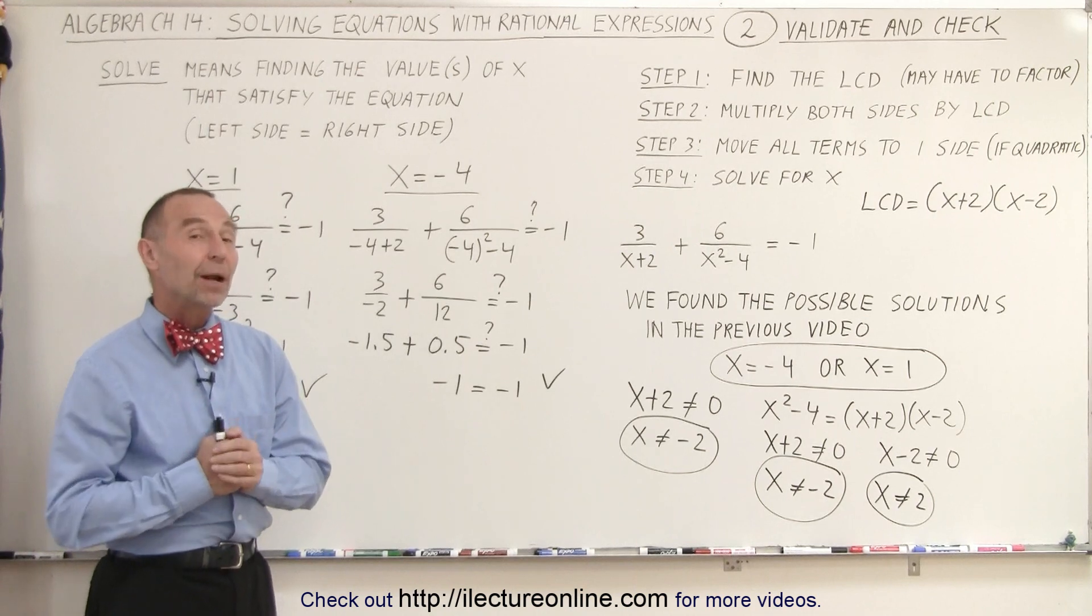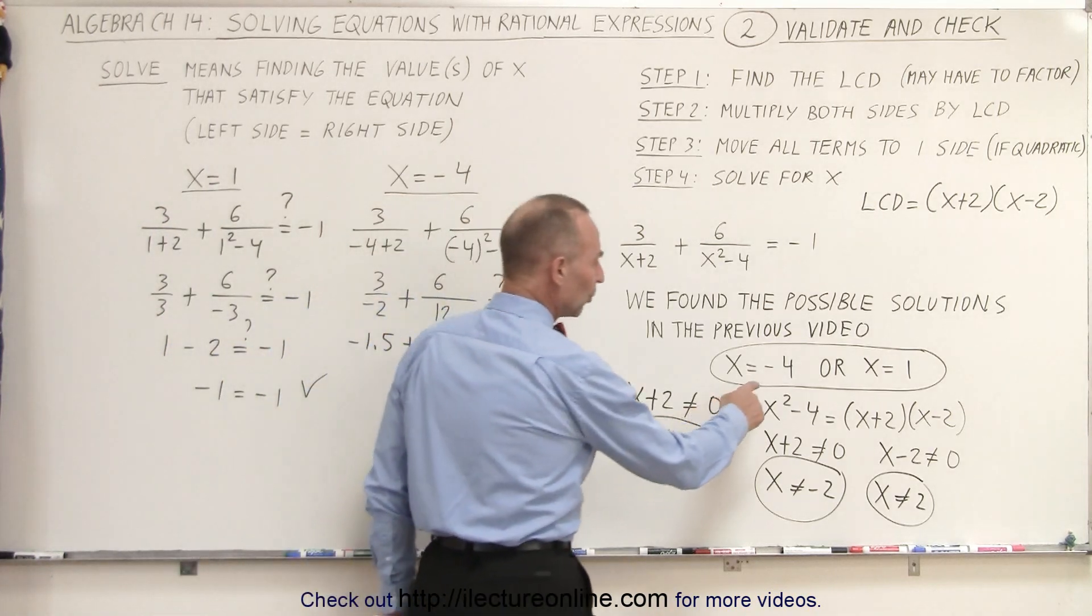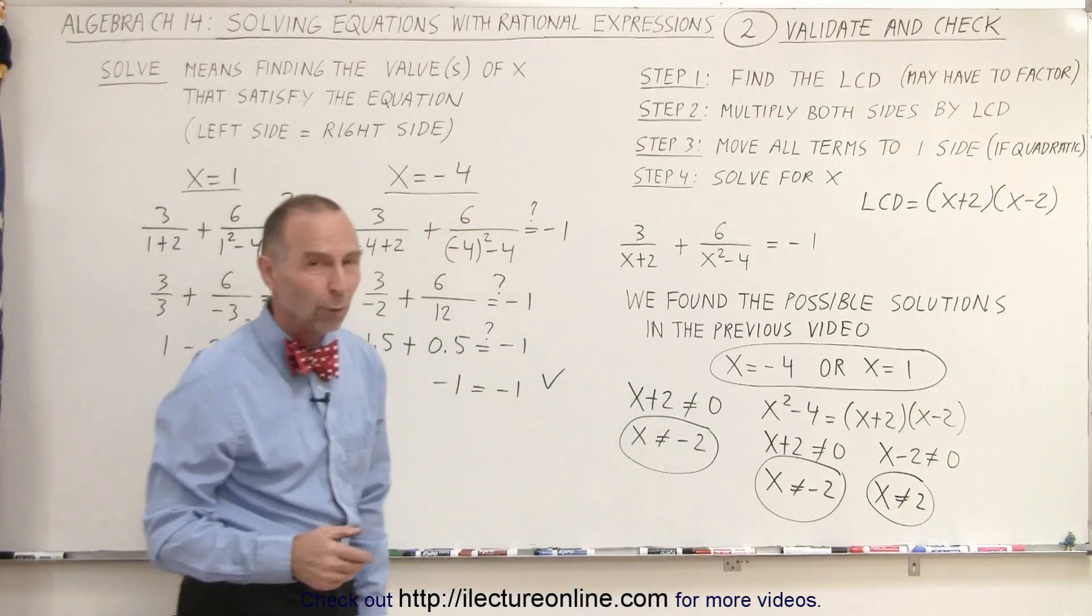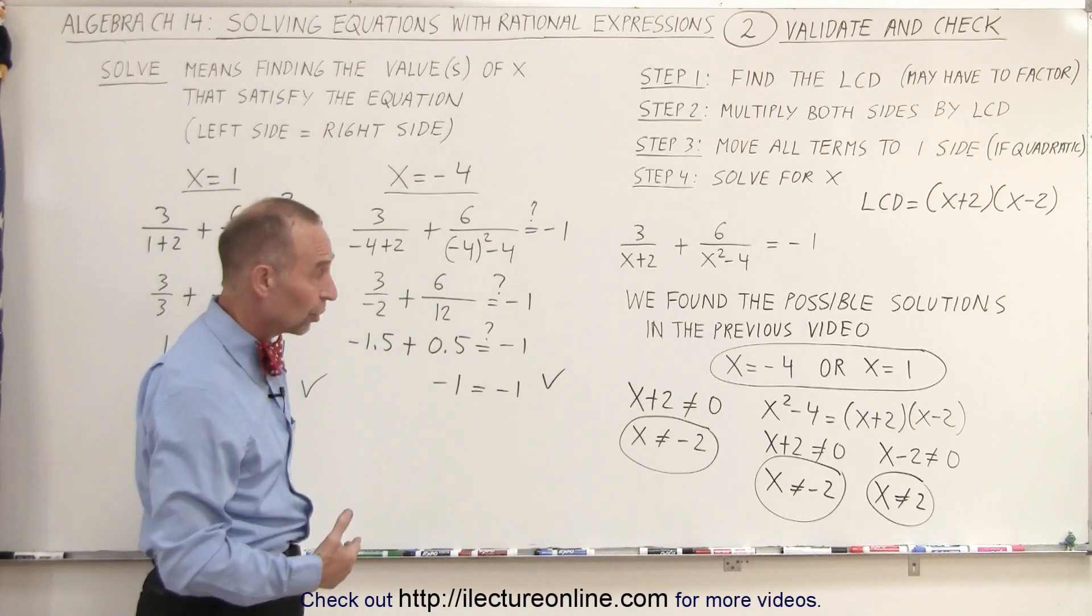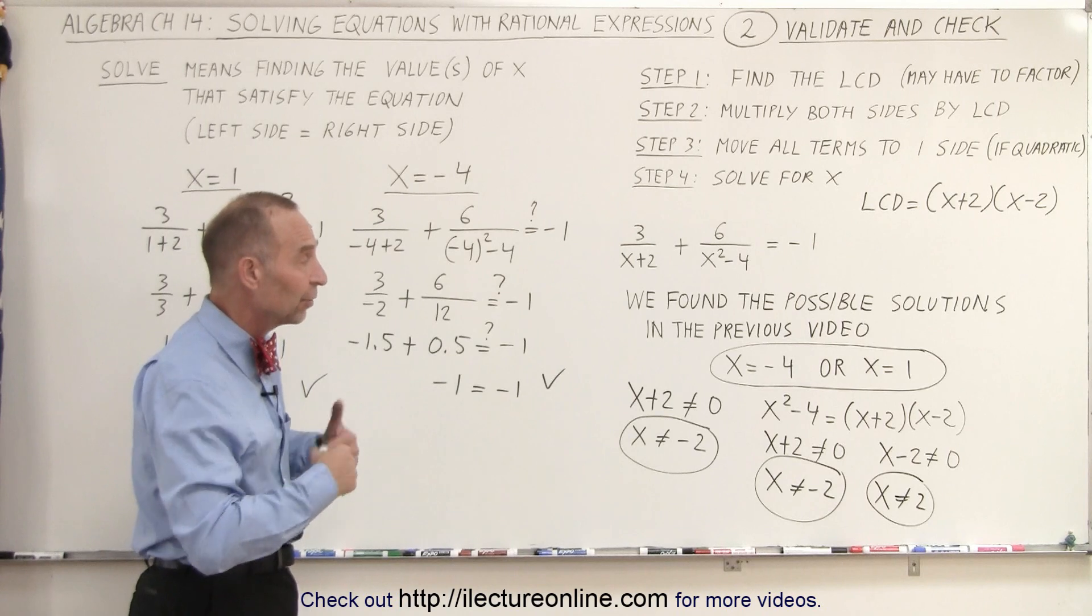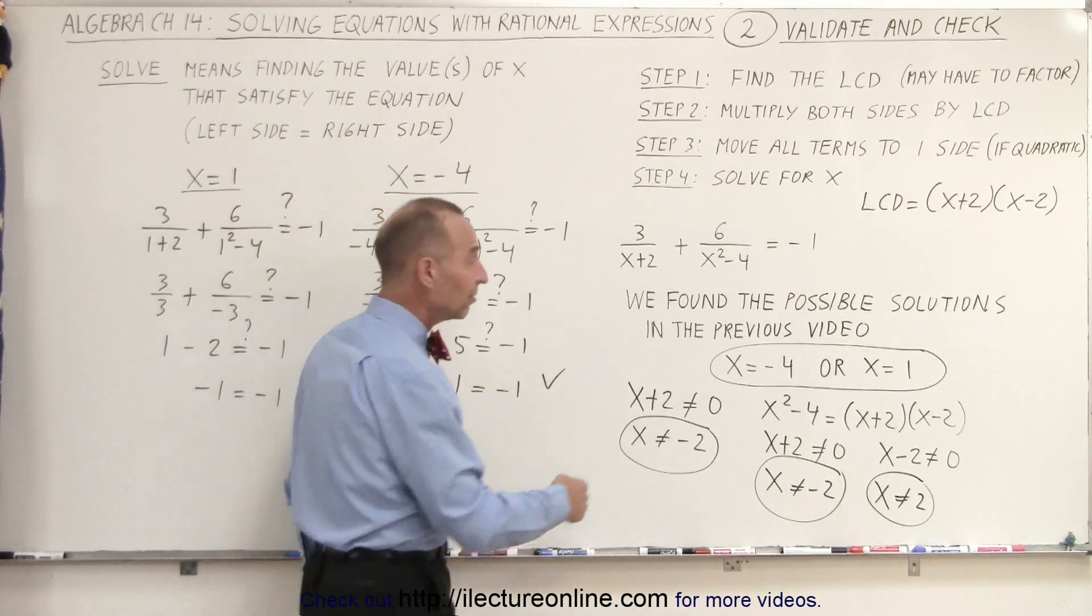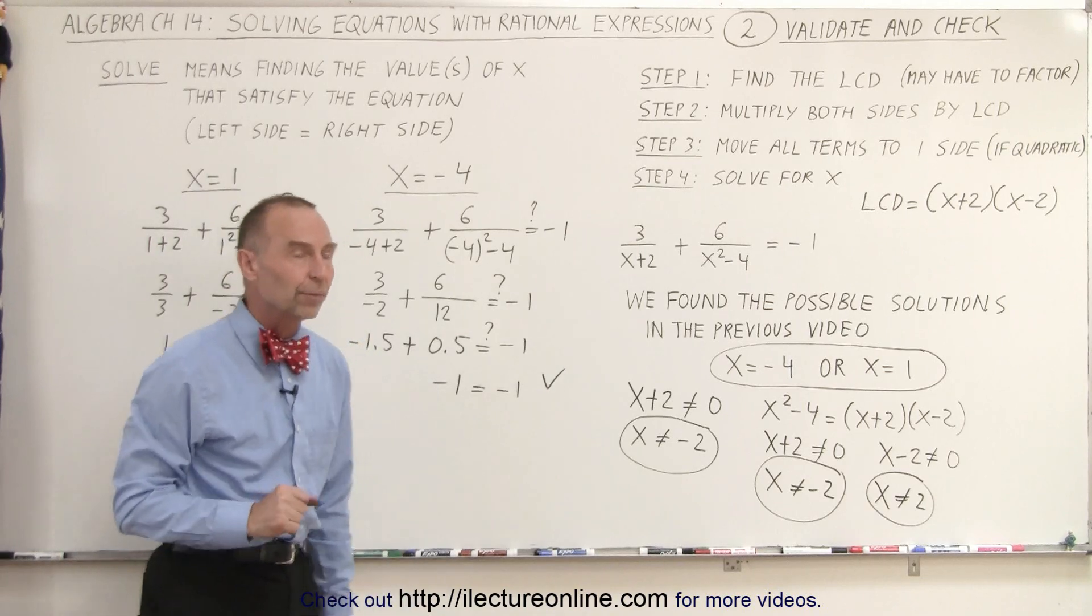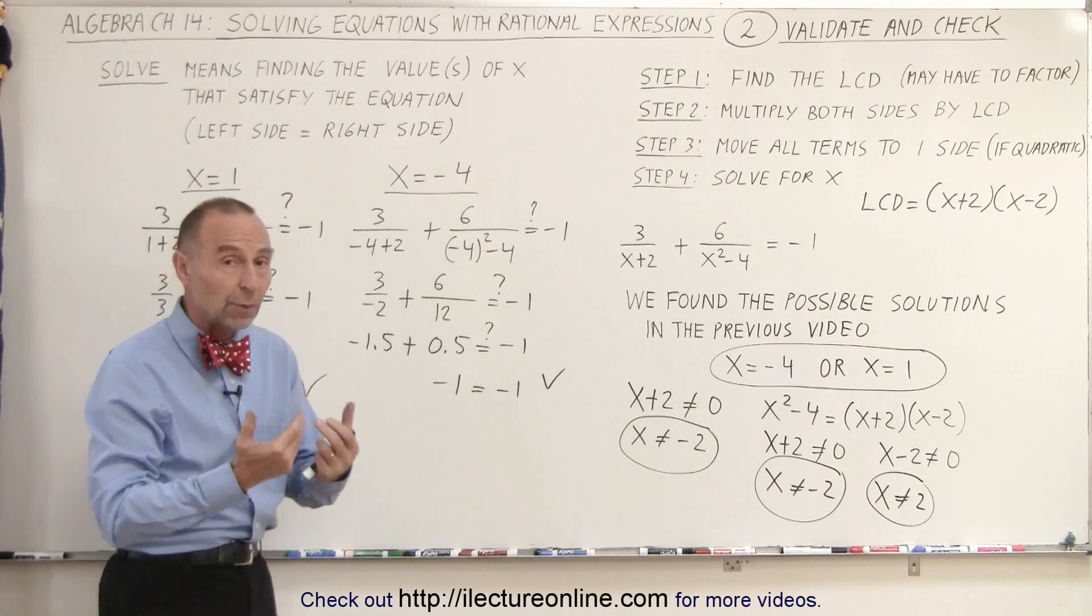There's one more thing we should mention that causes confusion. Notice the solution was marked as x equals negative 4 or x equals 1. Why did I not use the word and so that both are solutions to the equation? Well, it depends how you phrase the question, how you say the sentence. If I were to ask what are all the solutions to the equation, I would say x equals negative 4 and x equals 1 are both solutions to the equation.